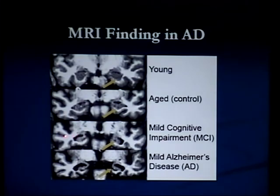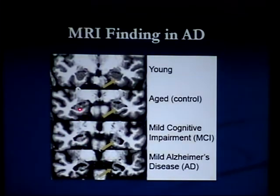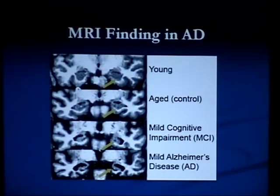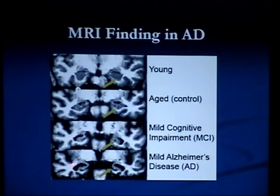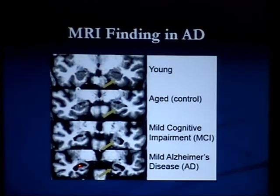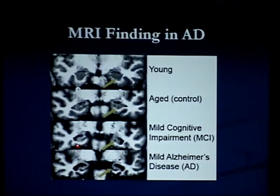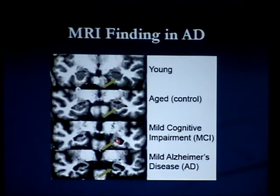But you can certainly see that there's more space here, more black here, than you see on this MRI. And then when mild Alzheimer's disease is diagnosed, you can see that these structures are even more atrophic. So if you just compare this black space here to the black space here, which is that temporal tip, you can see that there's a big difference.